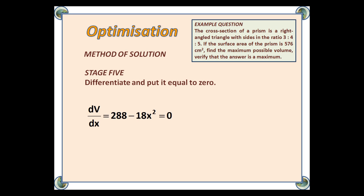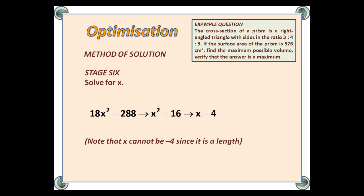When we differentiate, we get 288 - 18x². We put that equal to 0. And then when we solve that, we can add the 18x² to both sides, divide by 18, we get x² = 16, and we square root. So, x is 4. Obviously, minus 4 isn't possible, because that's not a length.